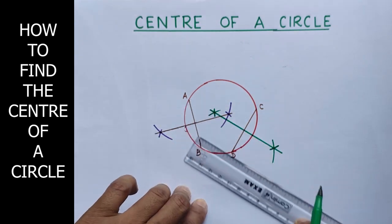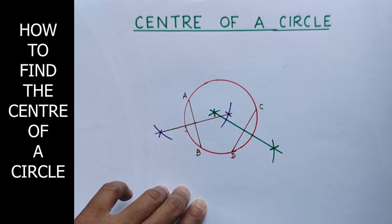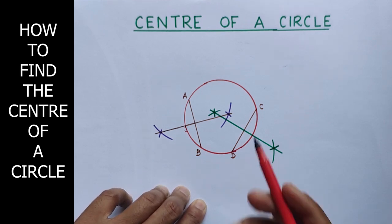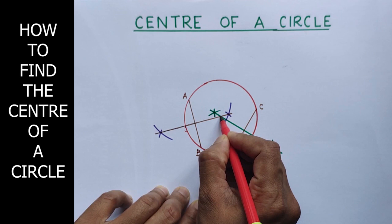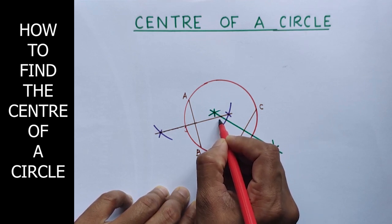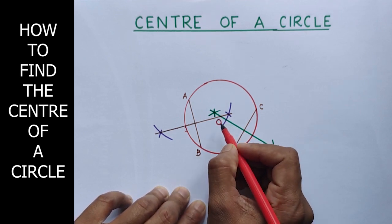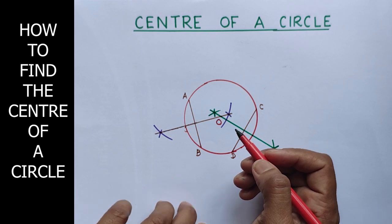See, this is the second perpendicular bisector. And these two bisectors intersect at O. So, this is the center. O is the center of this circle.